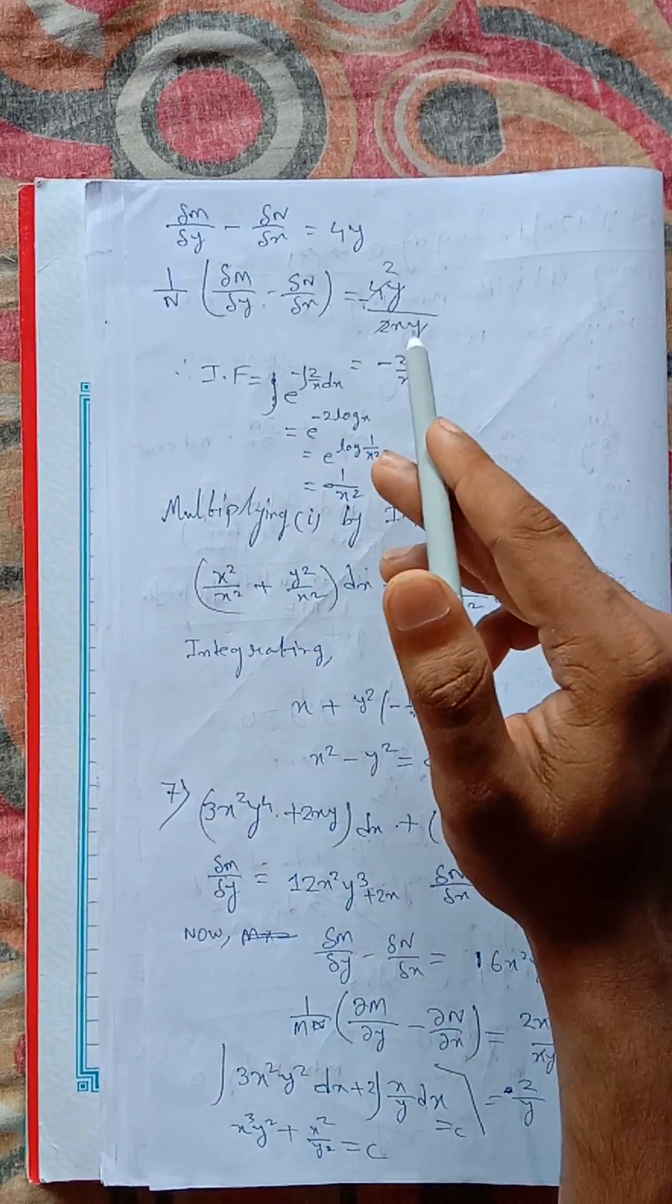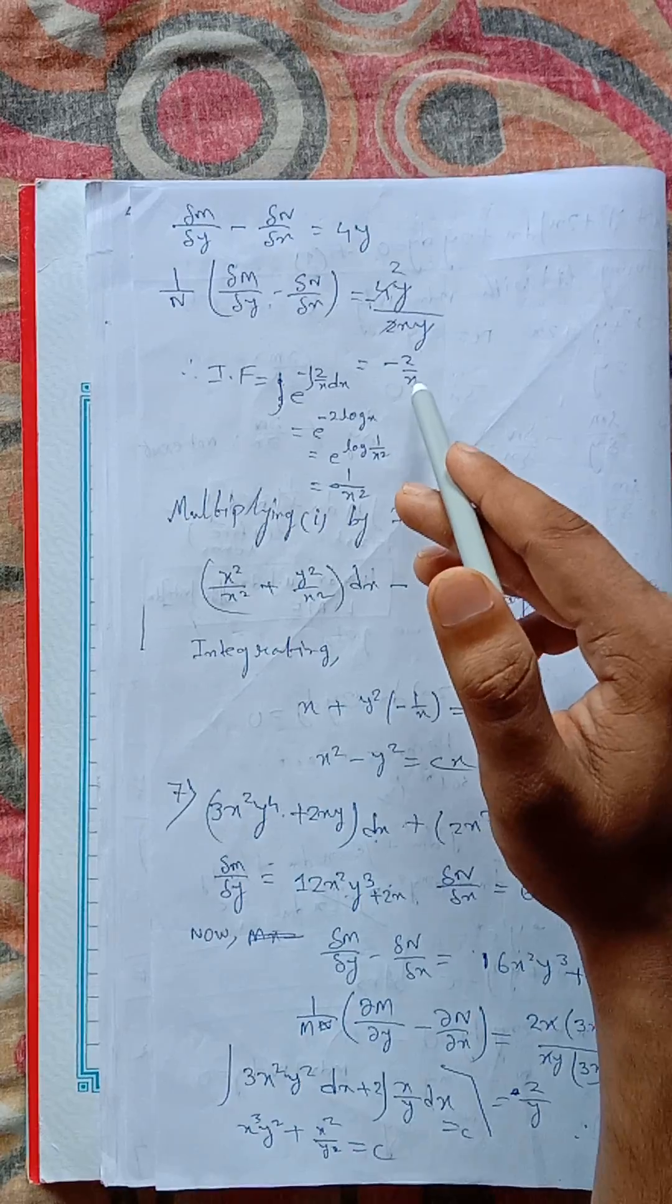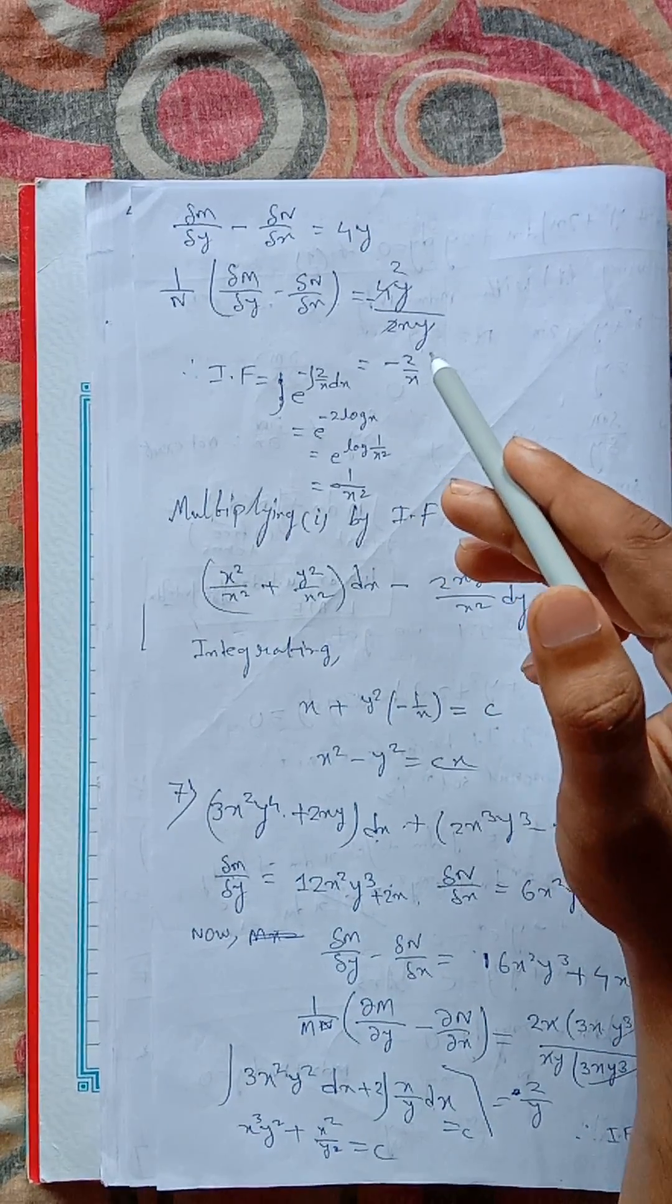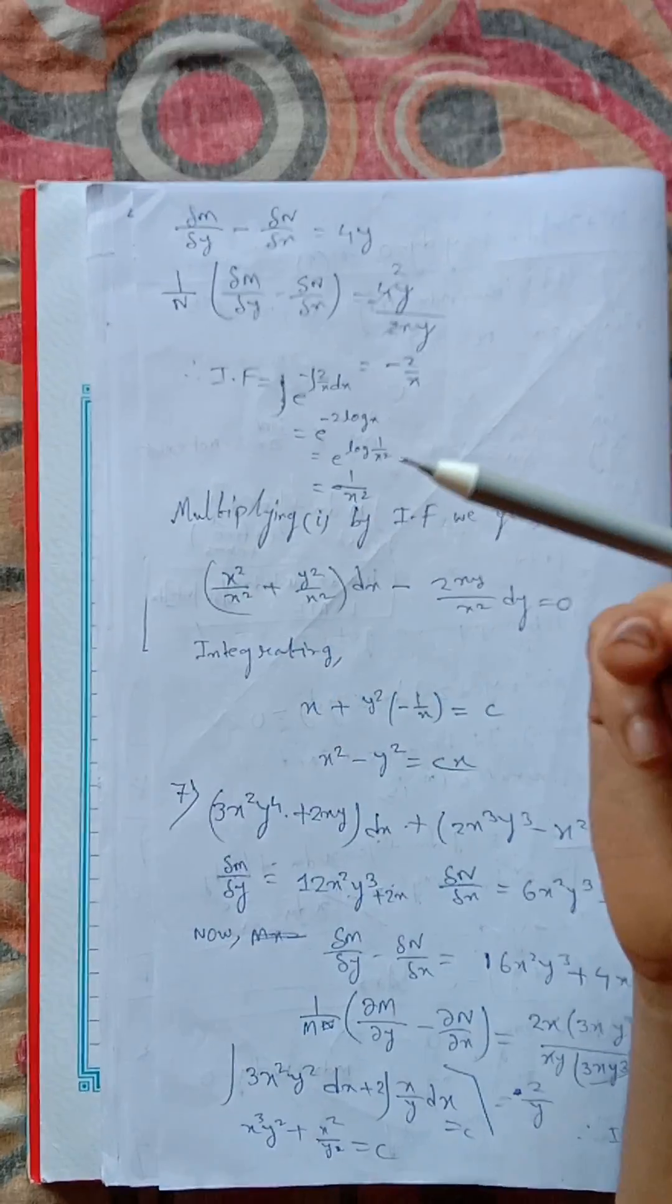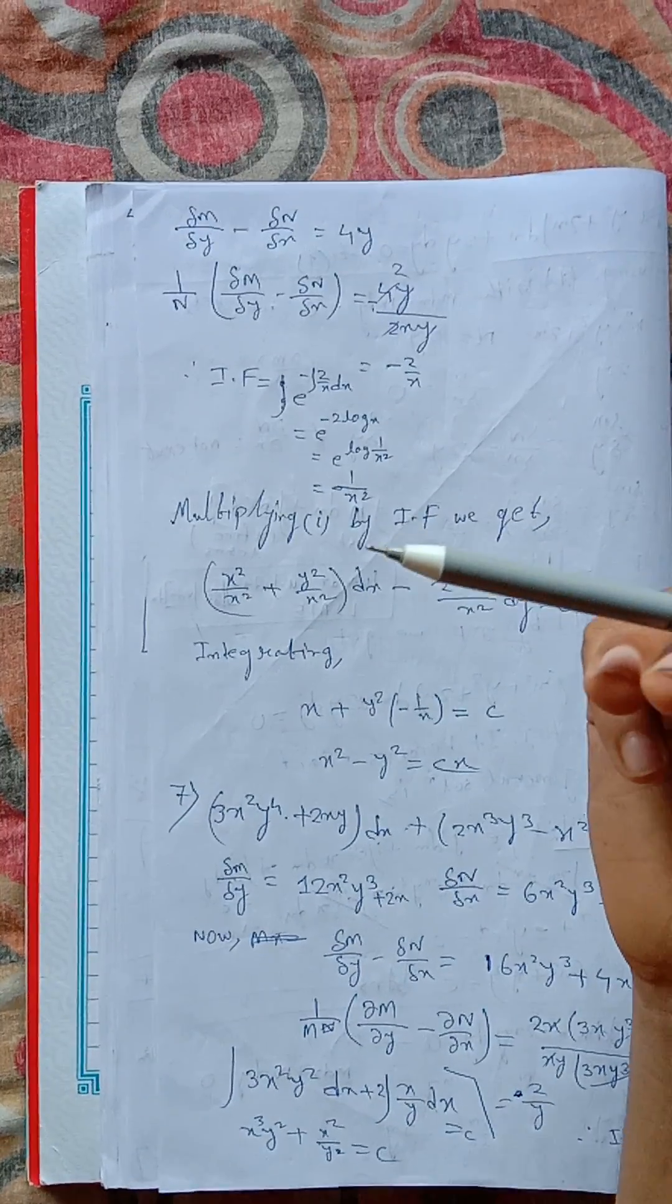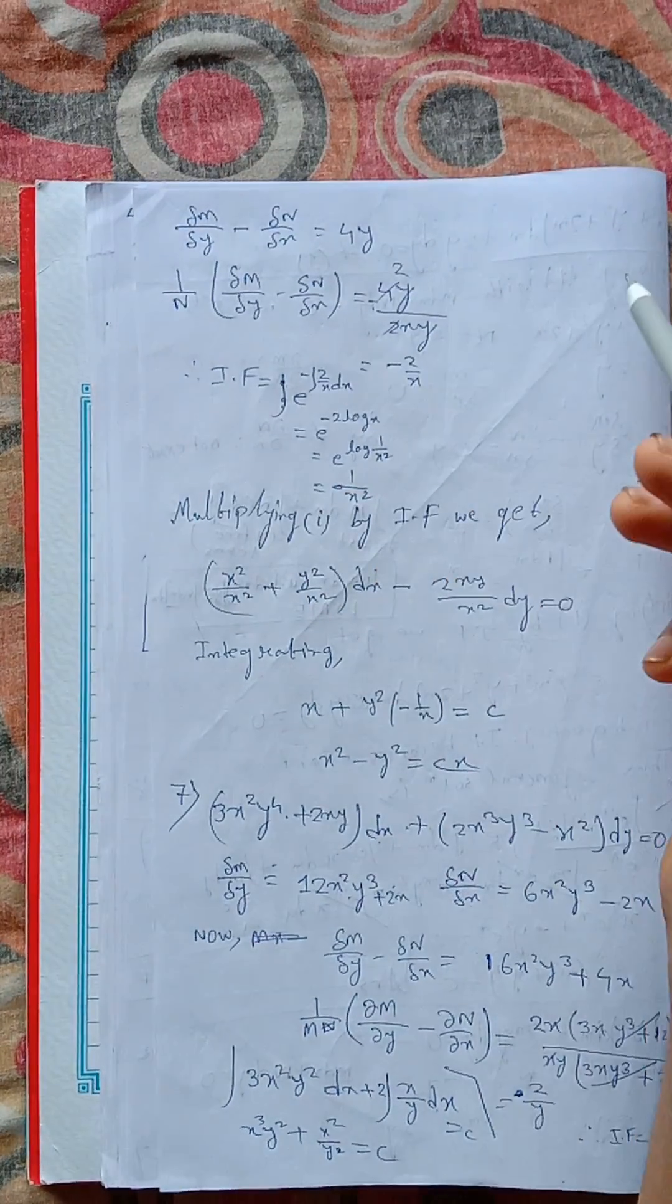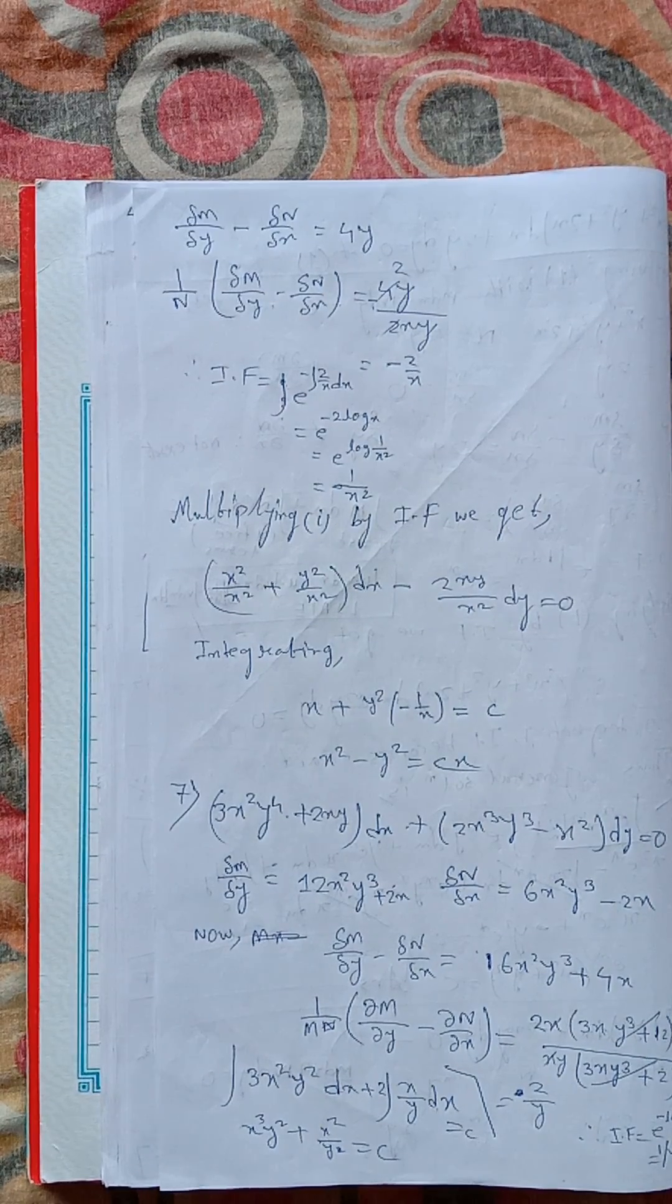And 1 by n into del m del y minus del n del x, we get this minus 2 by x. So what is the reason of dividing this by n? Why should we, why we cannot use m instead of n? I am explaining this now.